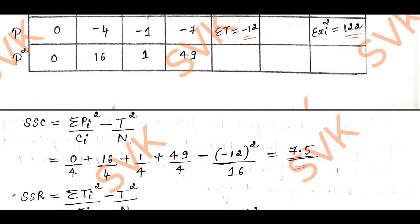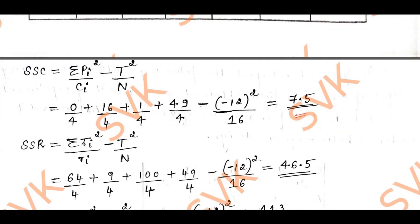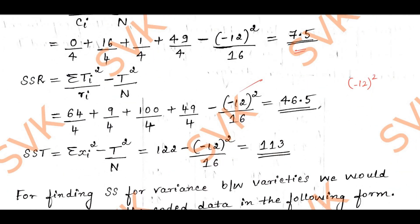Next I find SSR along the rows. Each row has 4 elements, so we divide by 4. That gives: 64/4 + 9/4 + 100/4 + 49/4 minus (minus 12)² / 16. Be careful: minus 12 squared is plus 144, not minus 144. So minus 144/16. Simplifying, SSR = 46.5.